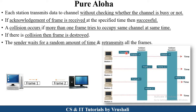Now suppose station 1 sends frame 1.1, but at that time station 2, station 3, and station 4 don't send any frame. That means there is only one frame on the cable at a time, so there is no chance of collision. Collision occurs when multiple frames are sent at the same time over a single cable or channel. This is called Pure Aloha.